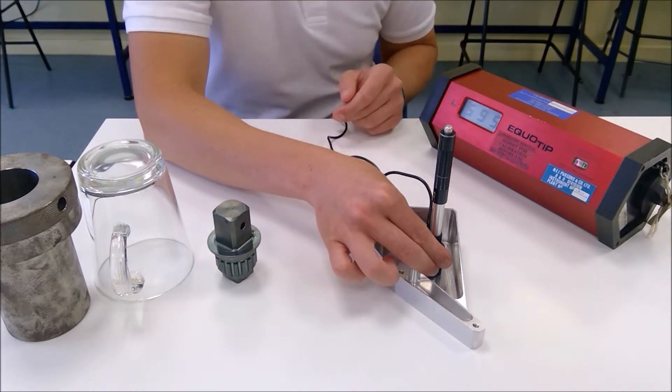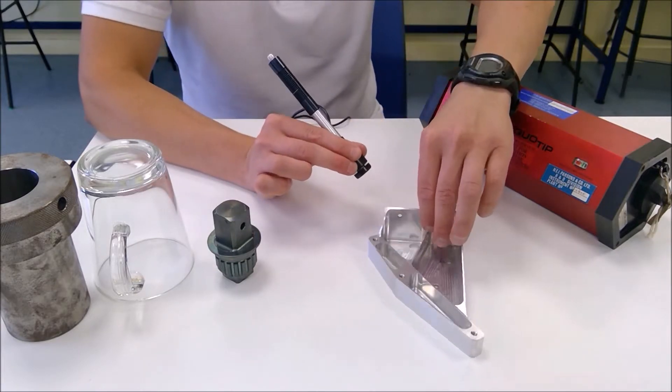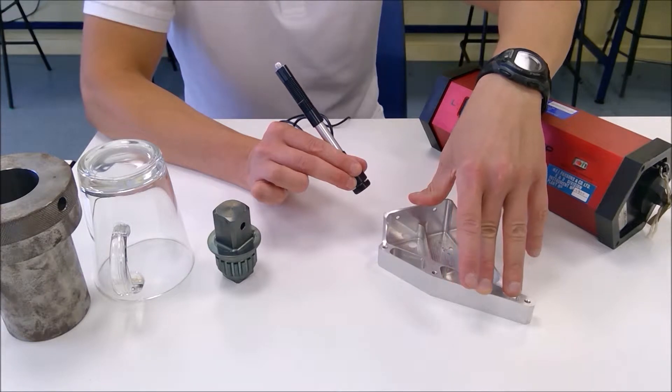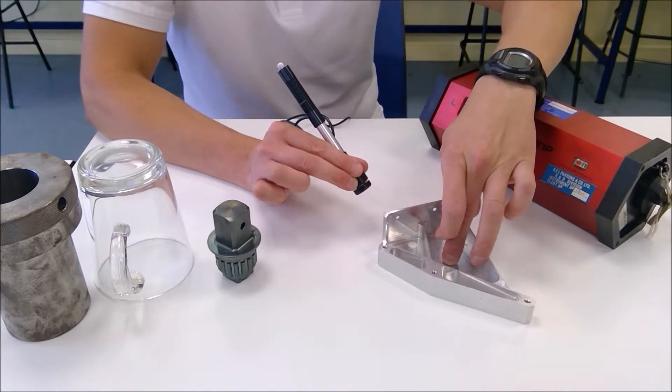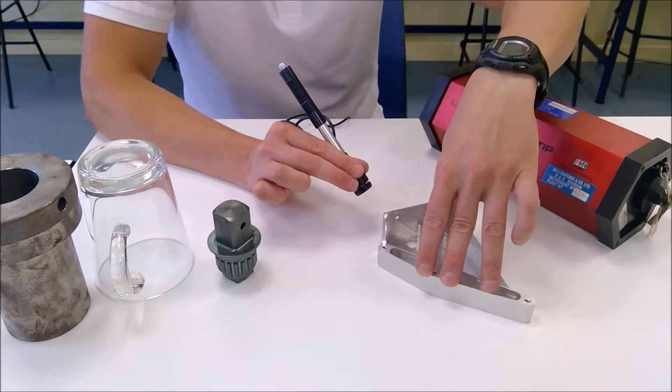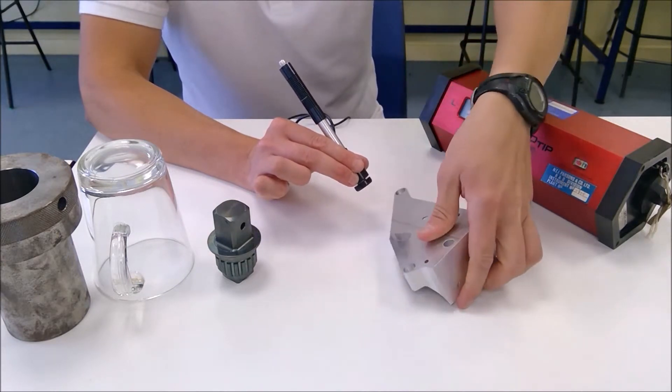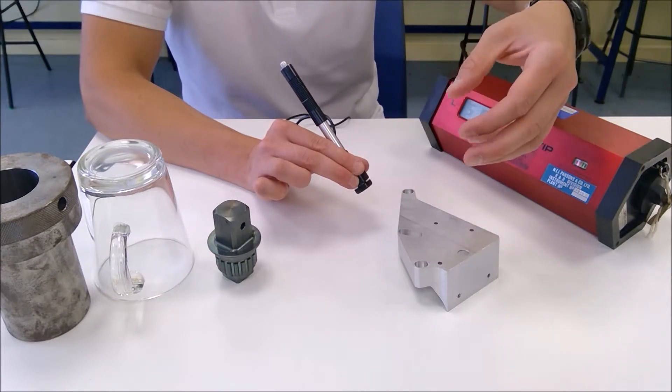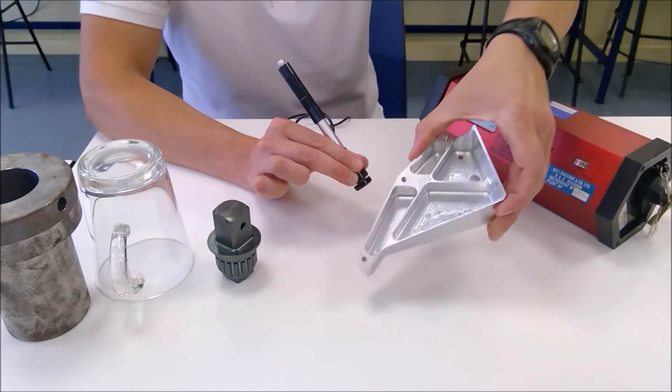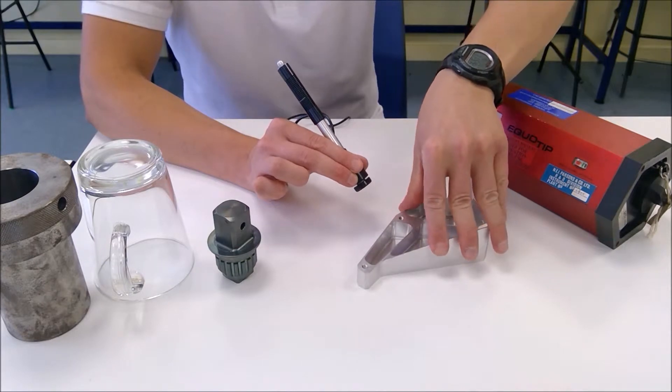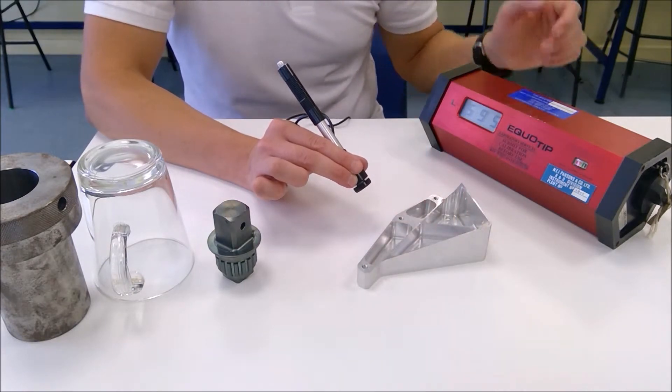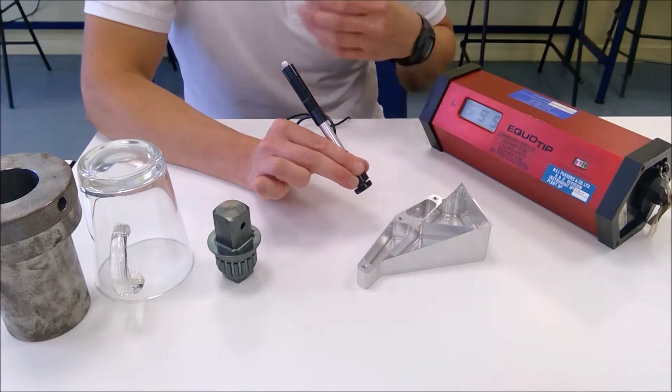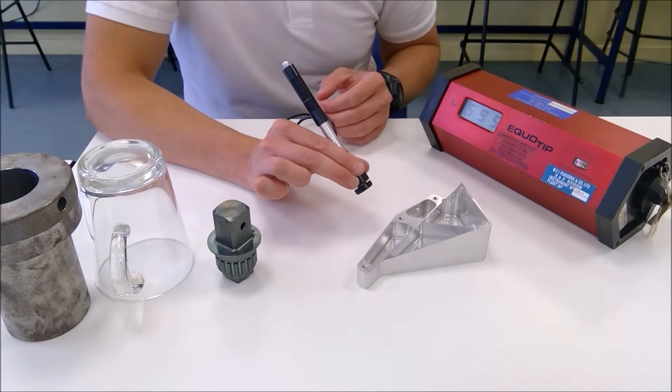One thing to be careful of when carrying out this test is to ensure that the piece of material is against a solid surface. What we're testing here is the hardness of the surface, and if this isn't against a stable base then what we might end up doing is having vibration in the piece of material itself and that would skew our results and give us inaccurate readings. So for each of the materials we're going to ensure that they're placed against a solid surface. We're going to take three readings of each material so that we can then take an average and that will give us a more accurate result for the hardness of each of these materials.